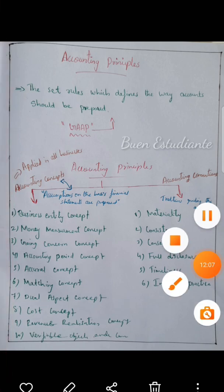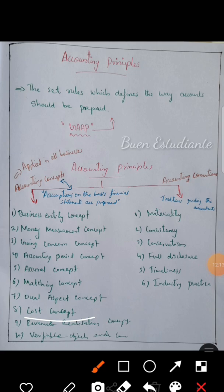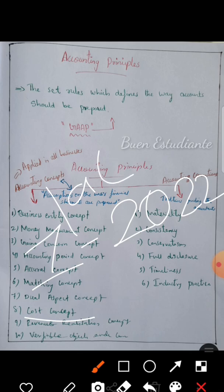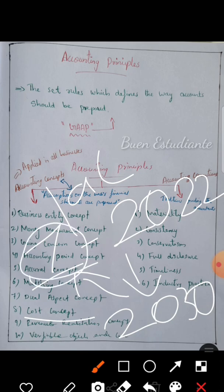The Cost Concept states that assets are recorded at their historical cost — that is, the price paid to acquire them. For example, a machine is recorded at its purchase price. Over time, depreciation is calculated on that original cost. We do not adjust for current market value; we continue using the original cost and calculate depreciation accordingly.